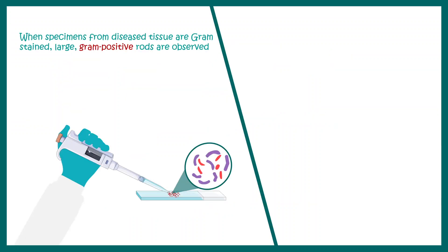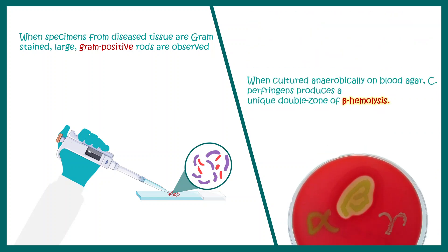Let's talk about how we can detect this particular bacteria in a laboratory setting. First of all, these bacteria are gram-positive. They can be cultured on a blood agar plate and they would show a characteristic double zone of beta hemolysis, which pretty much determines their presence.